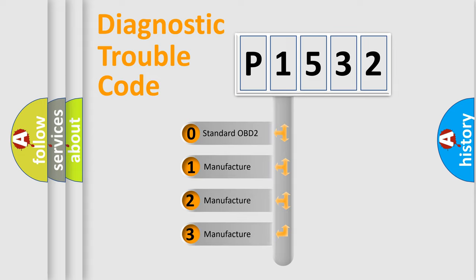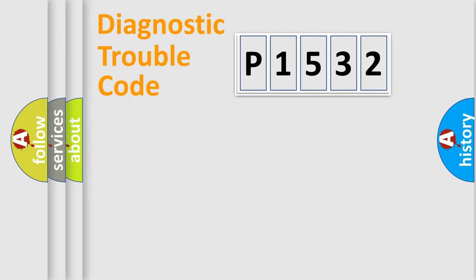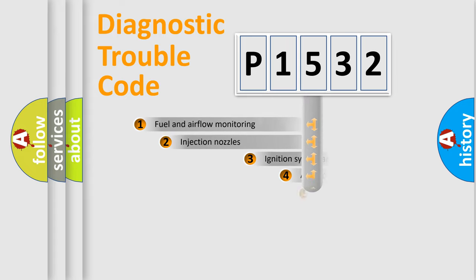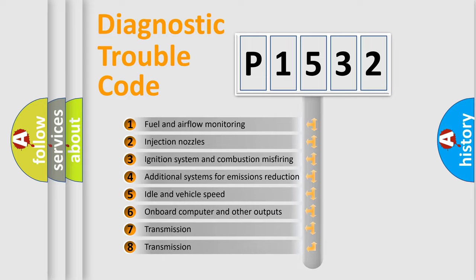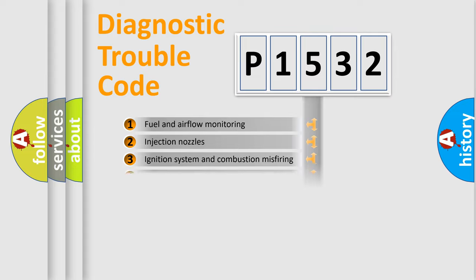If the second character is expressed as zero, it is a standardized error. In the case of numbers 1, 2, or 3, it is a manufacturer-specific error. The third character specifies a subset of errors. The distribution shown is valid only for the standardized DTC code.